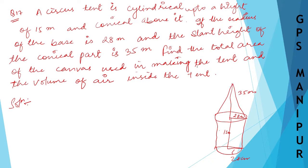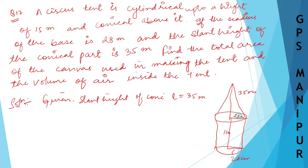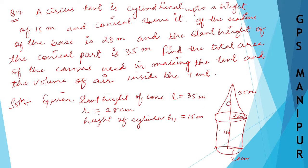Find the total area of the canvas used in making the tent. Given: L (slant height of the cone) = 35 meters, radius R = 28 meters, height of cylinder H1 = 15 meters. Height of cone H2 is not given, so we need to find it.